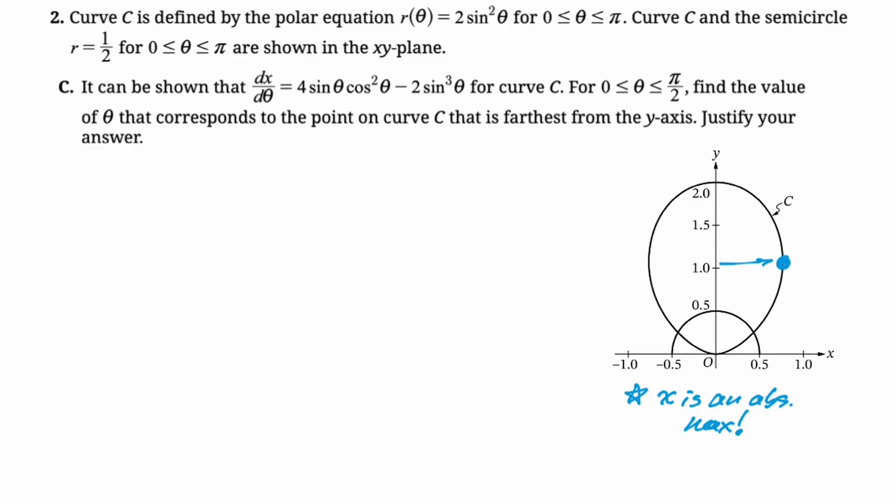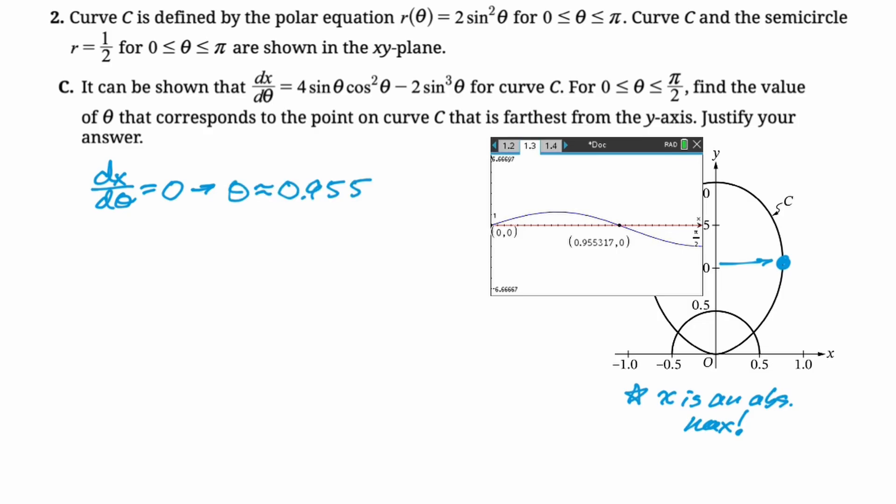So this could be the candidates test, or this could be lonely critical point theorem. Let's see what happens. So for starters, we need to know when dx/dθ is equal to zero. So we're looking for critical points calculator. I graphed dx/dθ and I got 0.955, I guess. So we'll say theta is approximately 0.955.